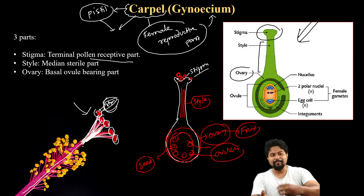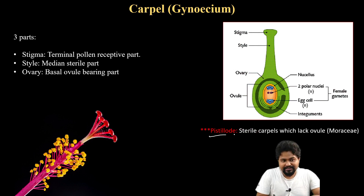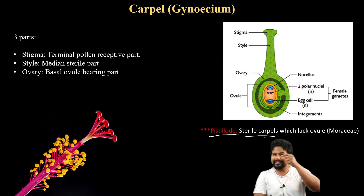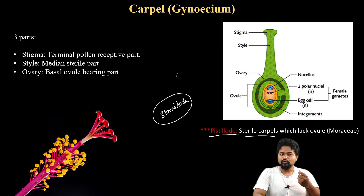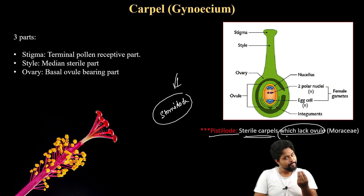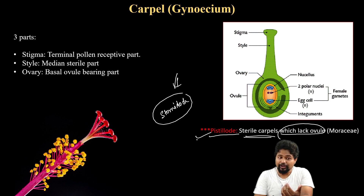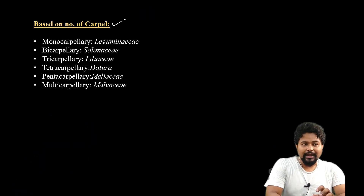Similarly, carpels can occur in different conditions. Pistillode means sterile carpels — carpels that lack ovules. Just as staminodes are sterile stamens that lack pollen grains, pistillode means sterile carpels which lack ovules. An example is Morrisia, a familiar plant where pistillodes can be observed.